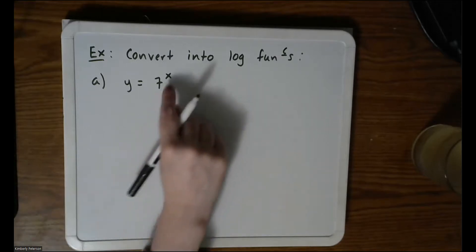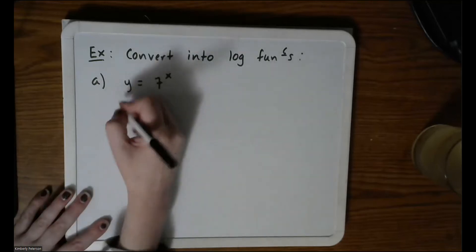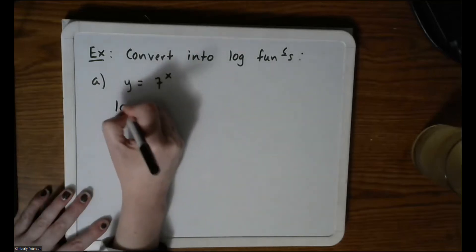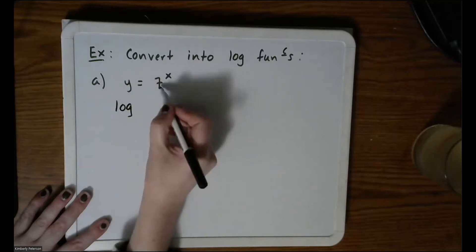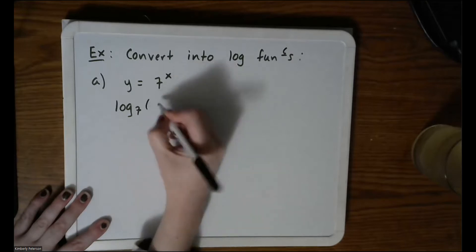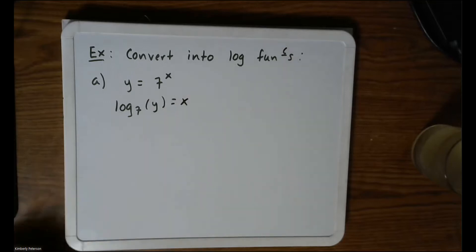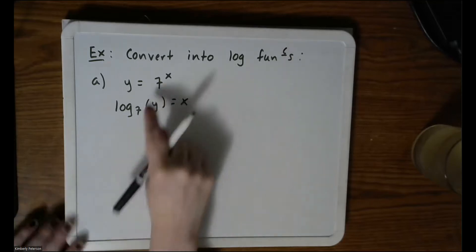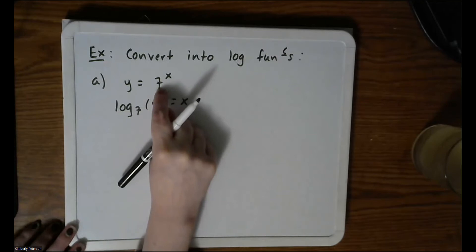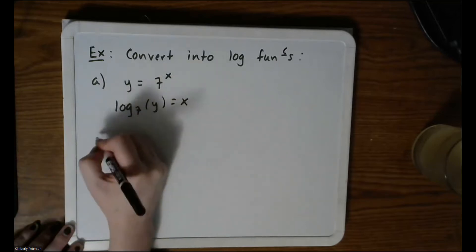This is an exponential function — I can tell because the variable is in the exponent. I'll convert it into a log, and they have to have the same base. So base seven, and then log base seven of y equals x. Notice what I'm doing: I pick the base, then flip x and y.